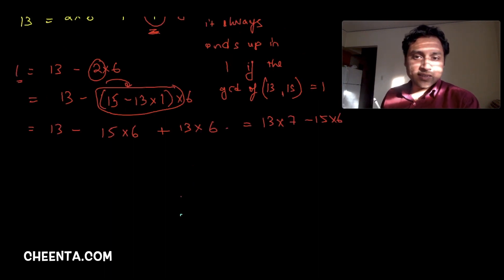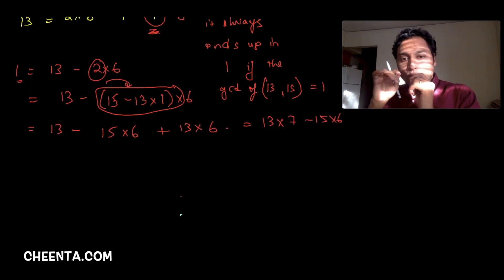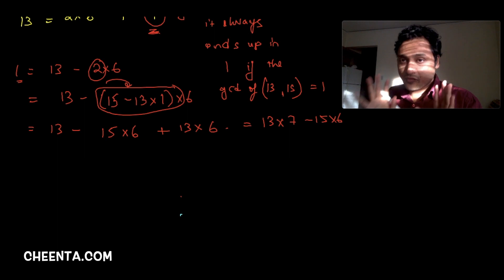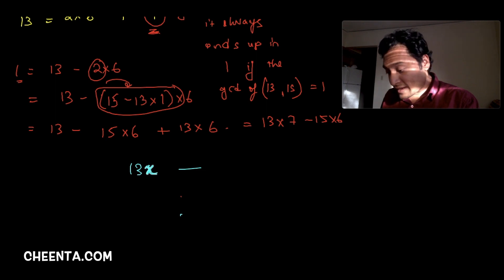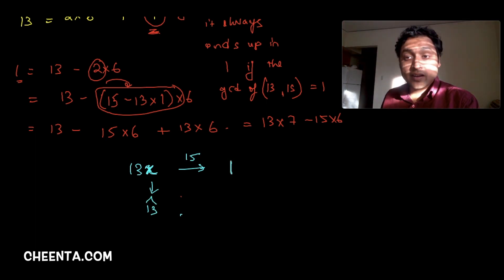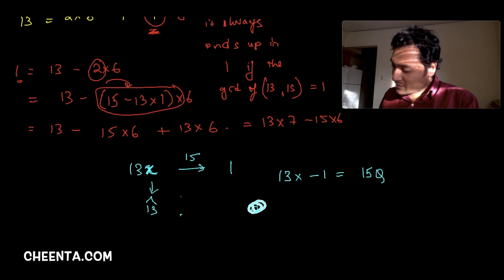Let me put it here so you can see it. 1 is 13 times 7 minus 15 times 6. That's the end product that we have so far. So what do we want? If we call 13 hat as x, if there is such a number, then 13x when divided by 15 will give remainder 1, or 13x minus 1 will be divisible by 15, so 15 times some q.